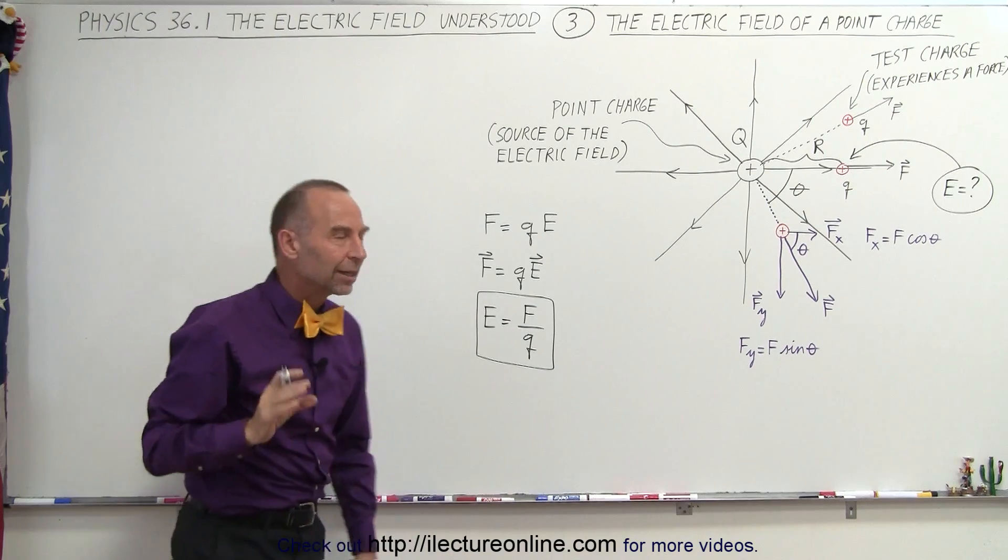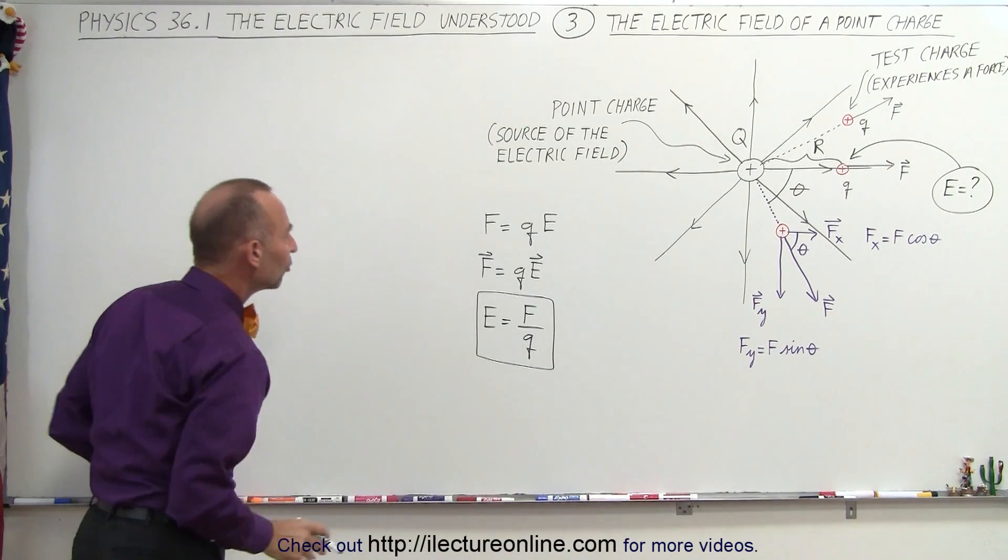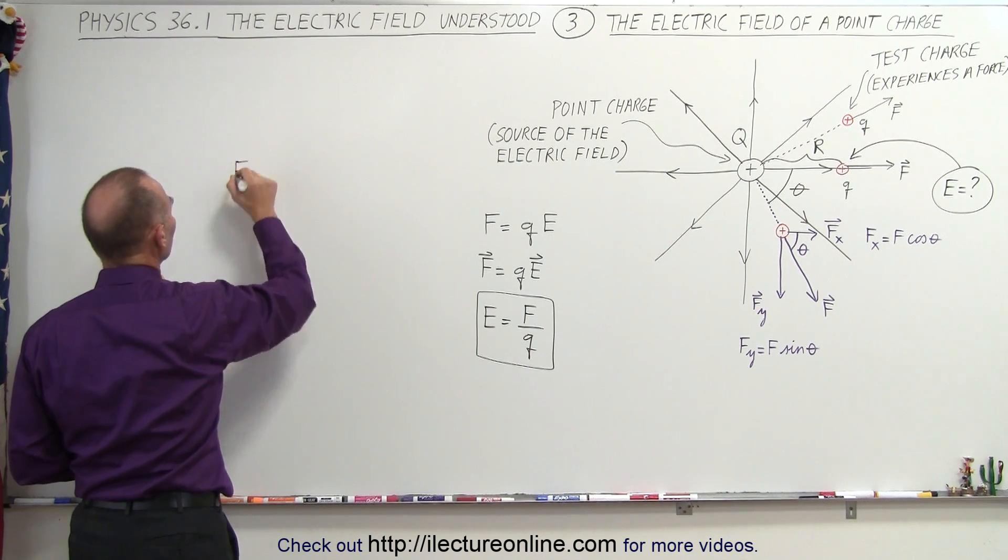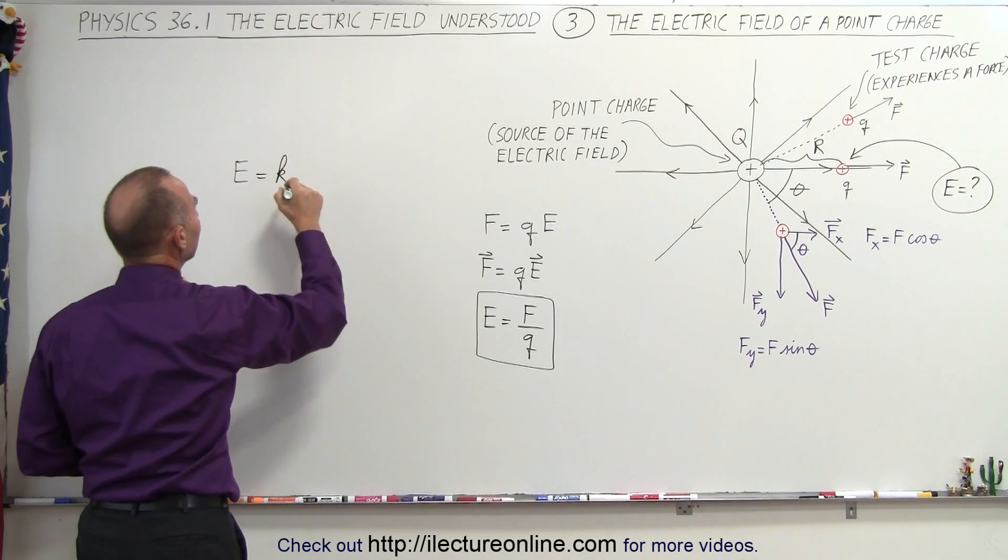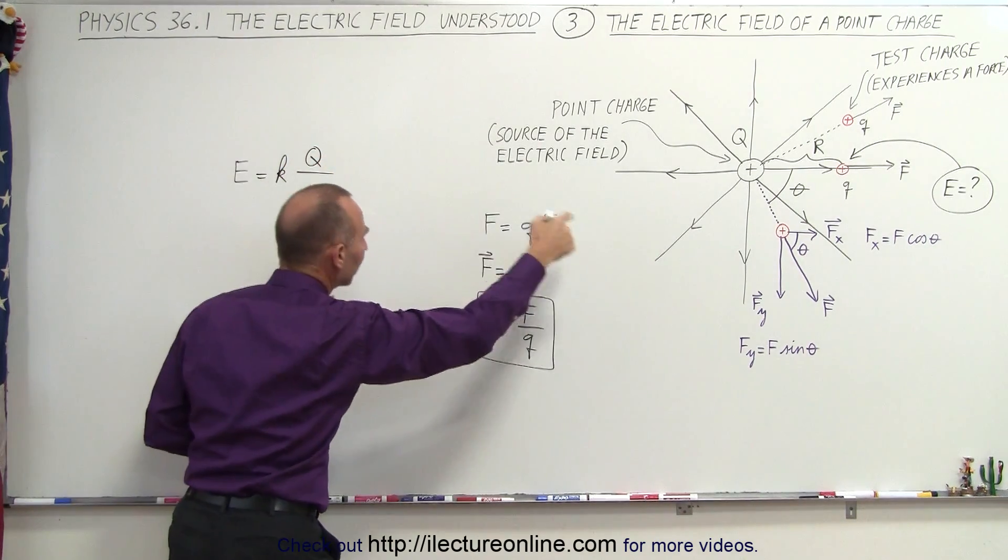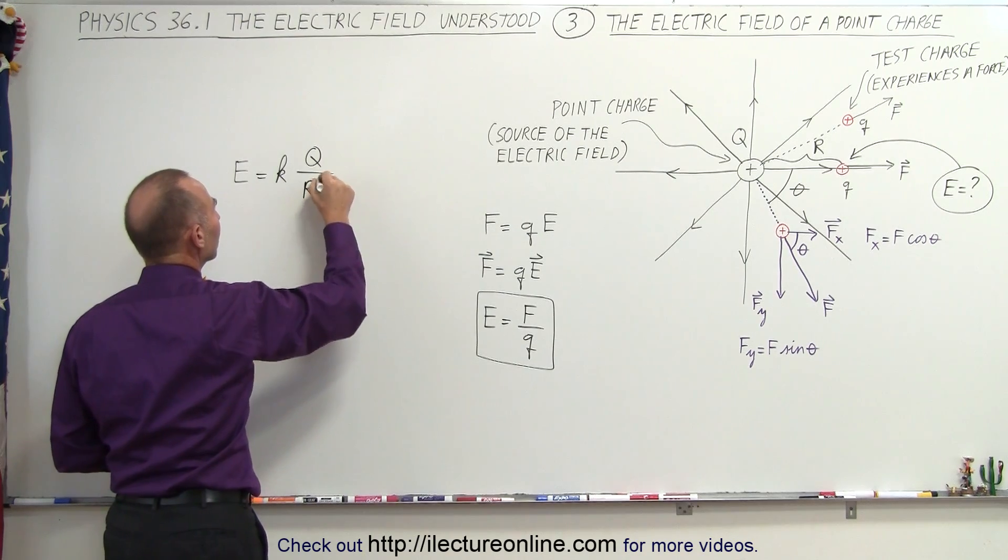There's another way in which we can calculate that based upon using a point charge. We can say that for a point charge, the electric field at any distance away from the point charge is equal to k times the charge that causes the electric field divided by the distance squared.